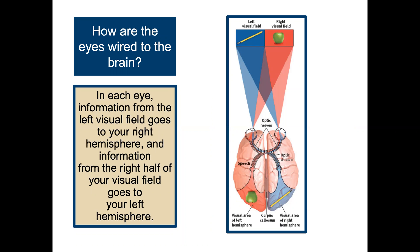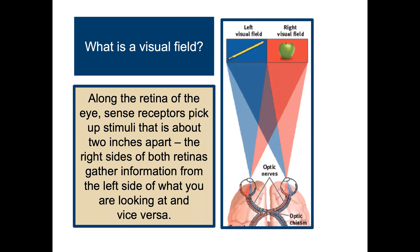How are the eyes wired to the brain? In each eye, information from the left visual field goes to your right hemisphere, and information from the right half of your visual field goes to your left hemisphere. Along the retina of the eye, sense receptors pick up stimuli about two inches apart. The right sides of both retinas gather information from the left side of what you're looking at, and vice versa.